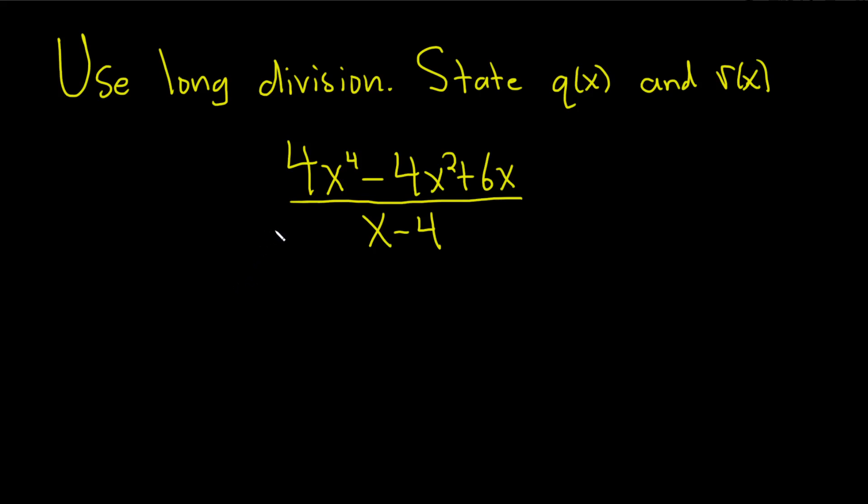In this problem, we're being asked to use long division and then state q(x), which is the quotient, and r(x), which is the remainder. Let's go ahead and go through it. So the first step is we're going to take this x minus 4 and write it out here like this.